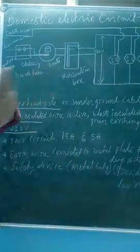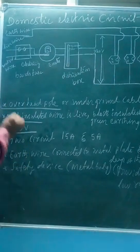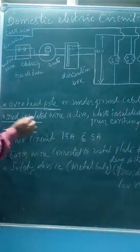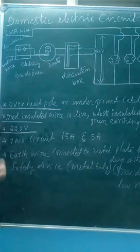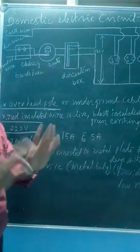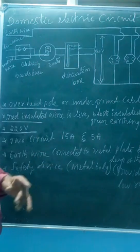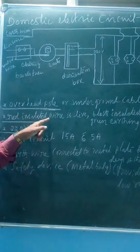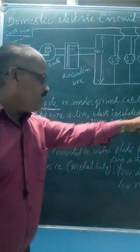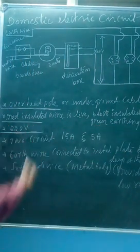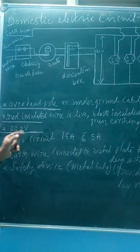So earthing is a safety device — it avoids electric shock. Fuse is for short circuit protection; earthing is for electric shock safety. This is about the domestic circuit. It is taken from the overhead pole and enters our house. Red insulated wire is called live wire — it has electric current and is insulated with red color. Black insulated is called neutral wire and green is earthing wire.